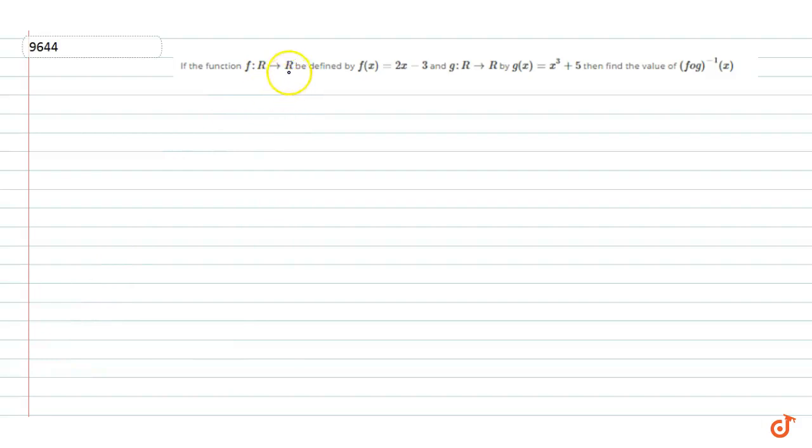In this question, if the function f: R to R is defined by f(x) = 2x - 3 and g: R to R by g(x) = x³ + 5, then find the value of f(g inverse x).